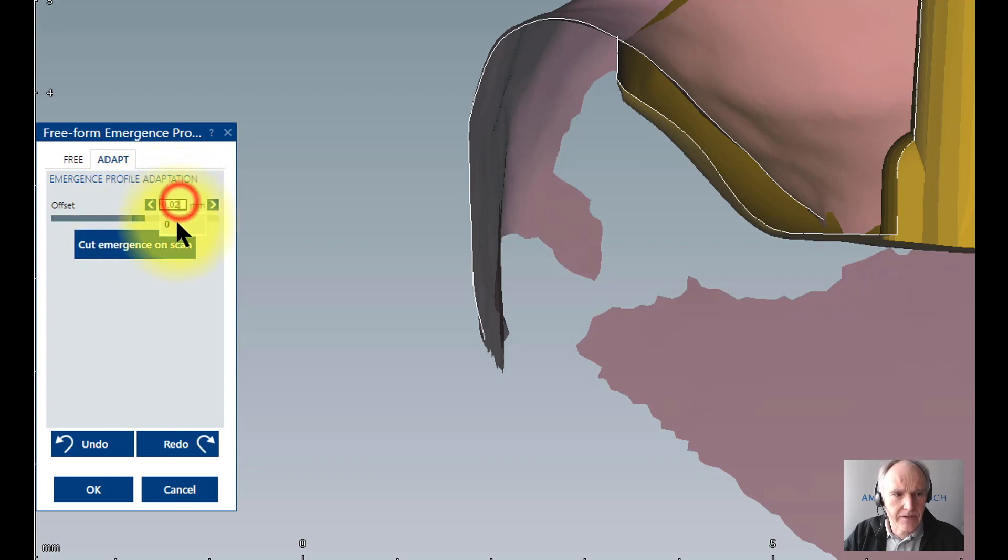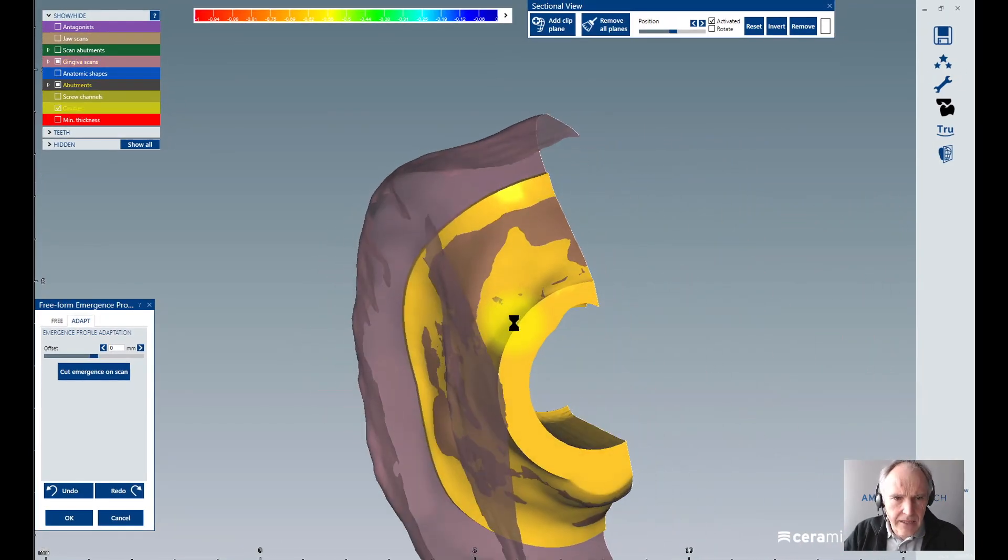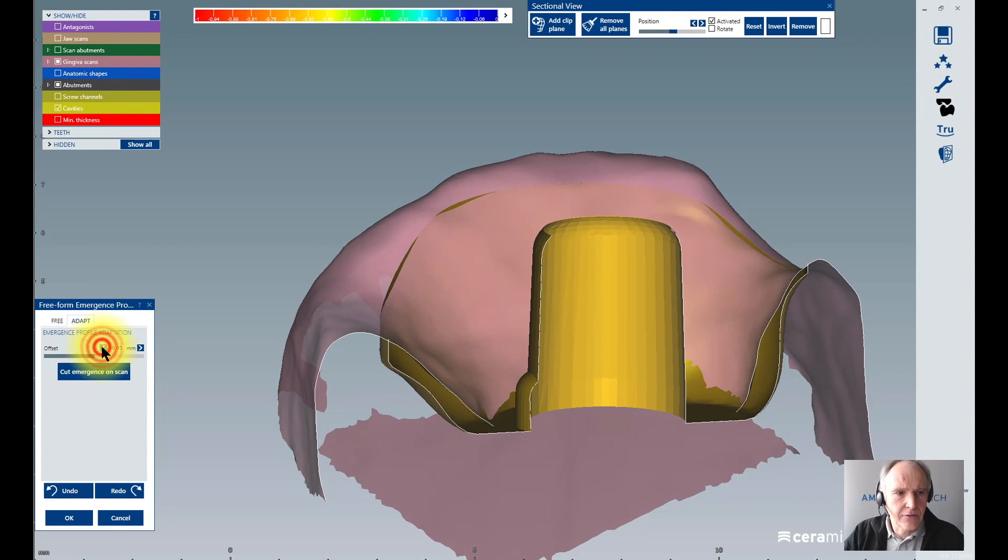If you want to have a cut on zero, for example, this is a standard value. You will see how the result will look like - it's like a fitting directly in zero. But if I want to have a little pressure, I go to minus, for example minus 0.3 or minus 0.5, and then I click again on cut emergence on scan. Now I get a direct fitting.